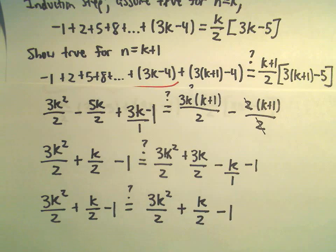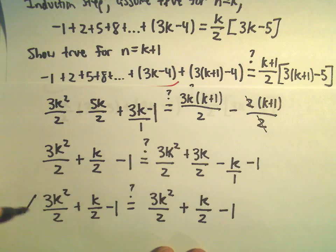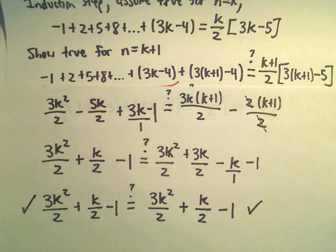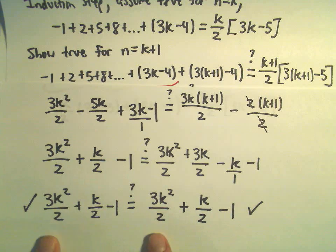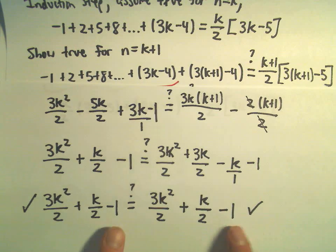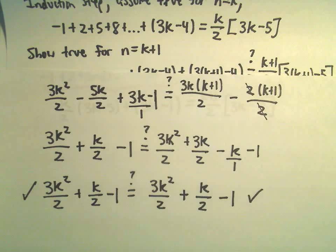3k minus 2k would give us positive k over 2, which is exactly what we want, okay? So, almost messed up there at the last step. So, 3k minus 2k will give us positive k. We now have the exact same stuff on both sides. That justifies the induction step, and that now proves the original statement.